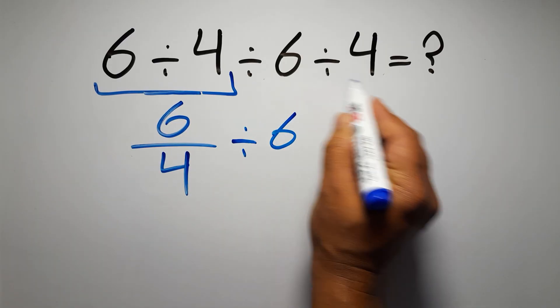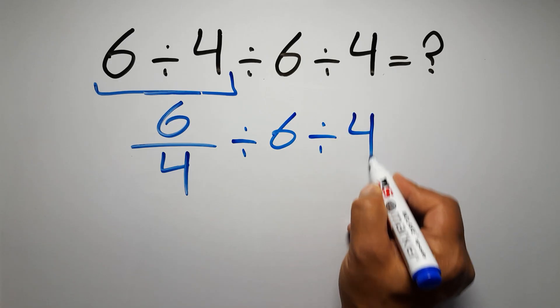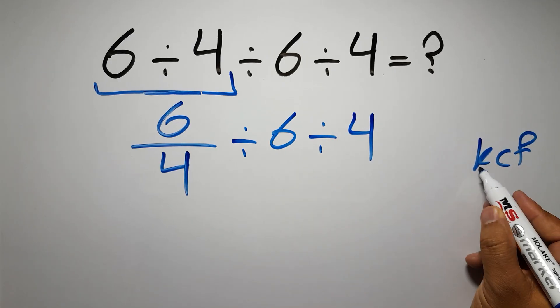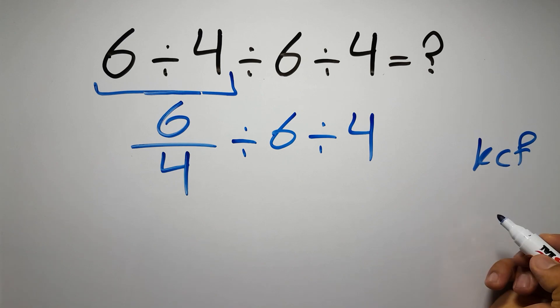Divided by 6 and divided by 4. According to the KCF rule, K stands for keep, C stands for change, and F stands for flip.